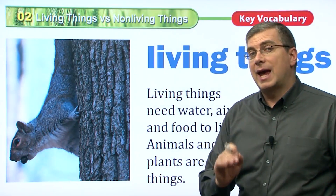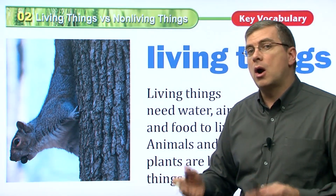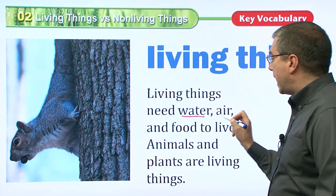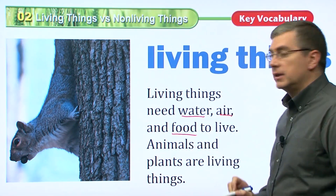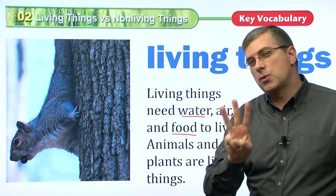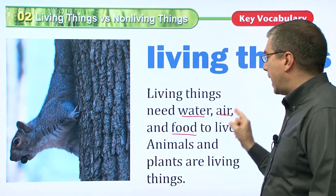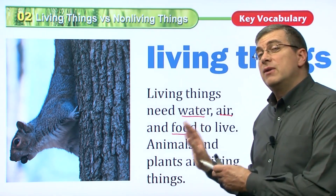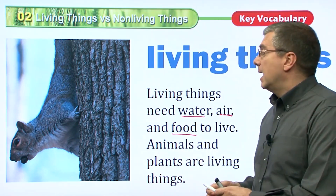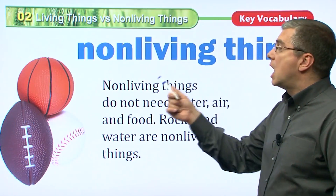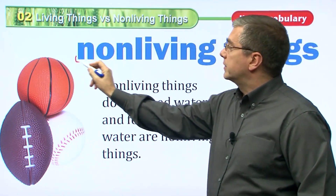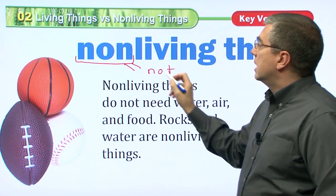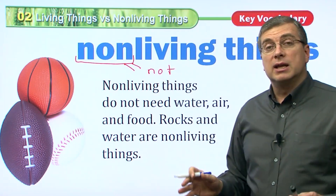First, let's look at living things. What are living things? Living things need water, air, and food to live. Living things need three things to live: they need water, air, and food. Animals and plants are living things.